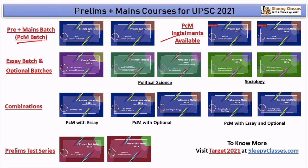These courses are available via EMI installments. We also have an Essay batch, along with Political Science Optional and Sociology Optional — three courses are being offered. Combinations are also available: if you want PCM with Essay (General Studies and Essay together), or if you want to choose Political Science or Sociology optional with or without essay, all options are available.